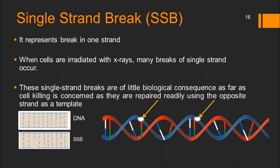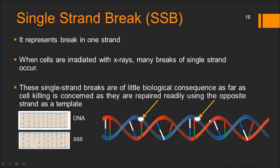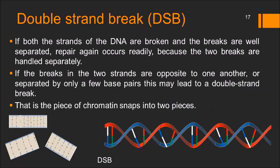A double strand break occurs when breaks are in opposite strands, directly opposite each other or separated by only a few base pairs, causing the DNA to snap into two pieces of chromatin. If both strands are broken and the breaks are well separated, repair occurs readily because the two breaks are handled separately. But if the breaks are opposite each other, this leads to a double strand break where the chromatin snaps into two pieces.